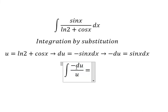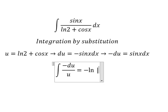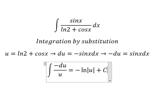So the integration of this one, we have negative ln of the absolute value of u, and we put c.